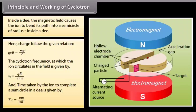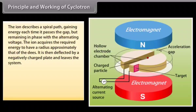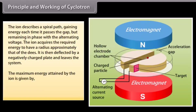At resonance condition, the ion arrives between the D's exactly in time to be repeatedly accelerated and gains energy. This energy gain does not affect the resonance condition except by increasing the orbit size. The ion describes a spiral path, gaining energy each time it passes the gap. The ion acquires the required energy to have a radius approximately that of the D's, is then deflected by a negatively charged plate, and leaves the system. The maximum energy attained by the ion is B²R²Q² / 2m.